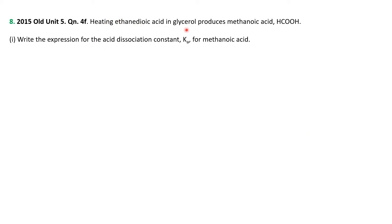Heating ethane dioic acid in glycerol produces methanoic acid, HCOOH. Write the expression for the acid constant for methanoic acid, so HCOOH plus H2O. It's an acid, so we make H3O plus, and the conjugate base, that's the HCOOH minus H plus, so HCOO minus. We know it's a weak acid because it's not a strong acid, so reversible reaction.